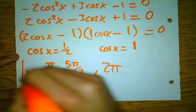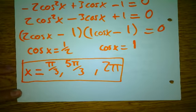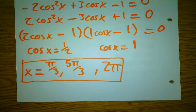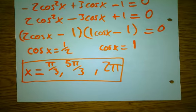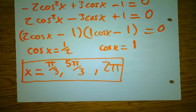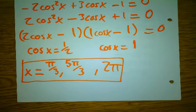You have to read each problem — each problem on the test will tell you the interval. Don't assume they're all going to be from 0 to 2π. Read the instructions and make sure you apply the correct interval for each problem.